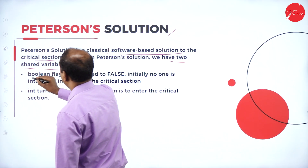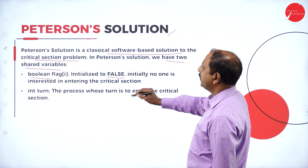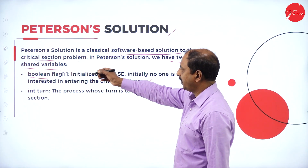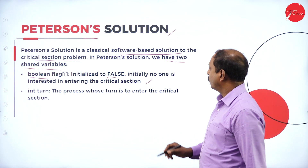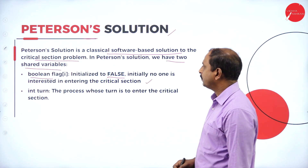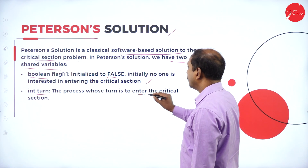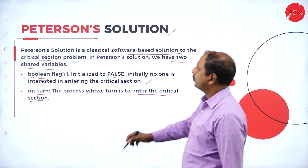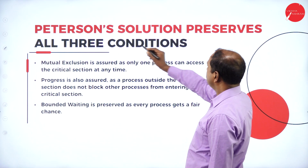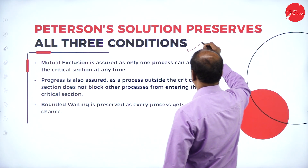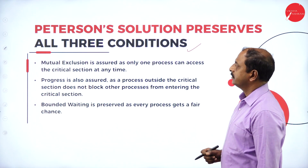Peterson's solution uses two shared variables. The first variable is a Boolean flag i, initialized to false, meaning initially no one is interested in entering the critical section. The second variable is int turn, which indicates whose turn it is to enter the critical section. These are the two shared variables in Peterson's solution. Peterson's solution preserves all three conditions and all three conditions must be fulfilled.